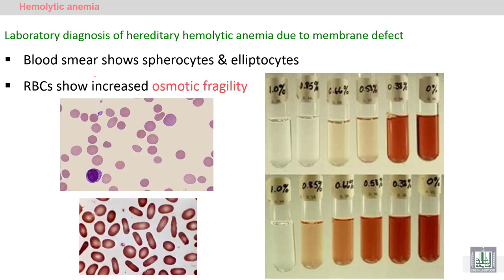Laboratory diagnosis and confirmation of Hereditary Spherocytosis and Elliptocytosis is not only by finding Spherocytes, Ovalocytes, or Elliptocytes on screening. The screening detects abnormal RBCs, but the confirmatory test is the Osmotic Fragility Test — this is the confirmatory test for hereditary membrane defects.